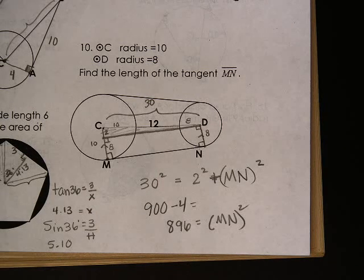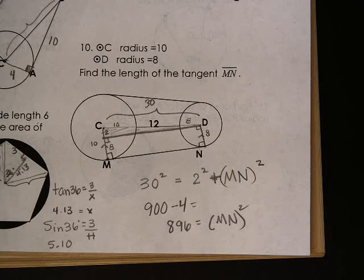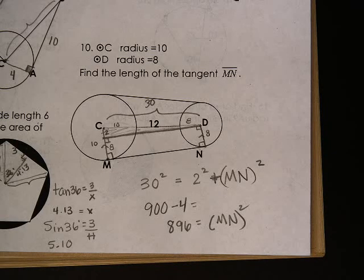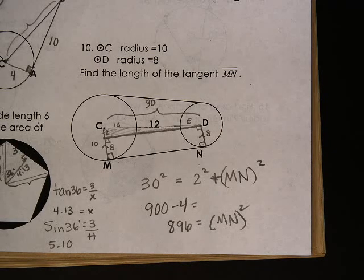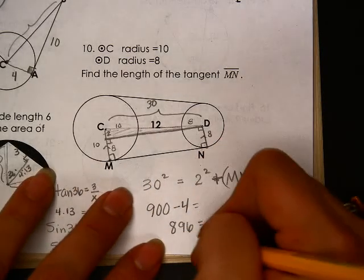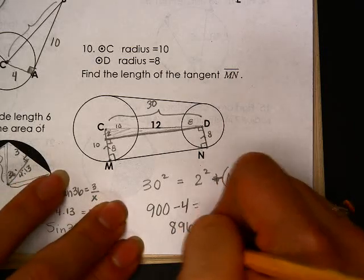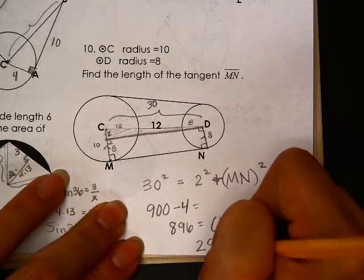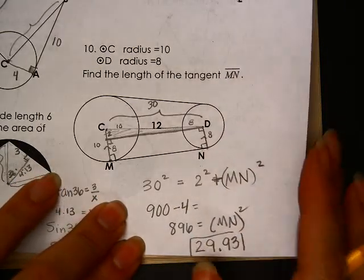I square root that. Square root of 896. So MN is equal to 29.93 for the answer.